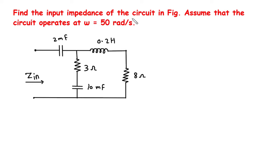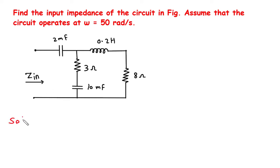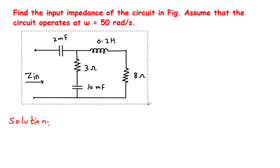Find the input impedance of the circuit in the figure. Assume that the circuit operates at omega equal to 50 radians per second. We have to find this input impedance. Solution: first we will redraw the circuit.